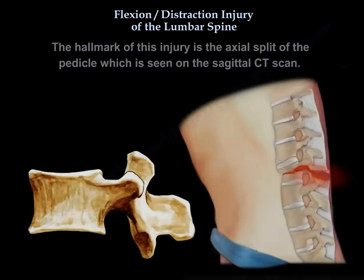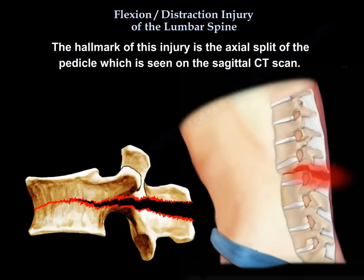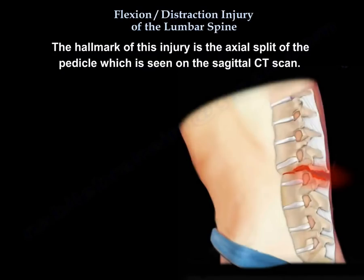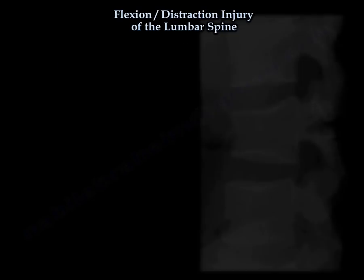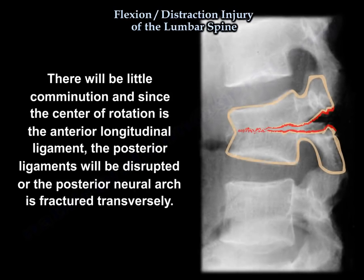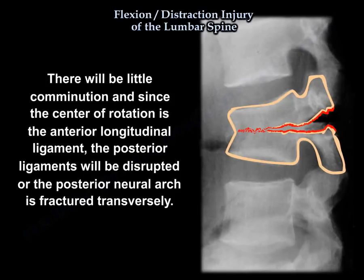The hallmark of this injury is the axial split of the pedicle, which is seen on sagittal CT scan. There will be little comminution, and since the center of rotation is the anterior longitudinal ligament, the posterior ligament will be disrupted or the posterior neural arch is fractured transversely.